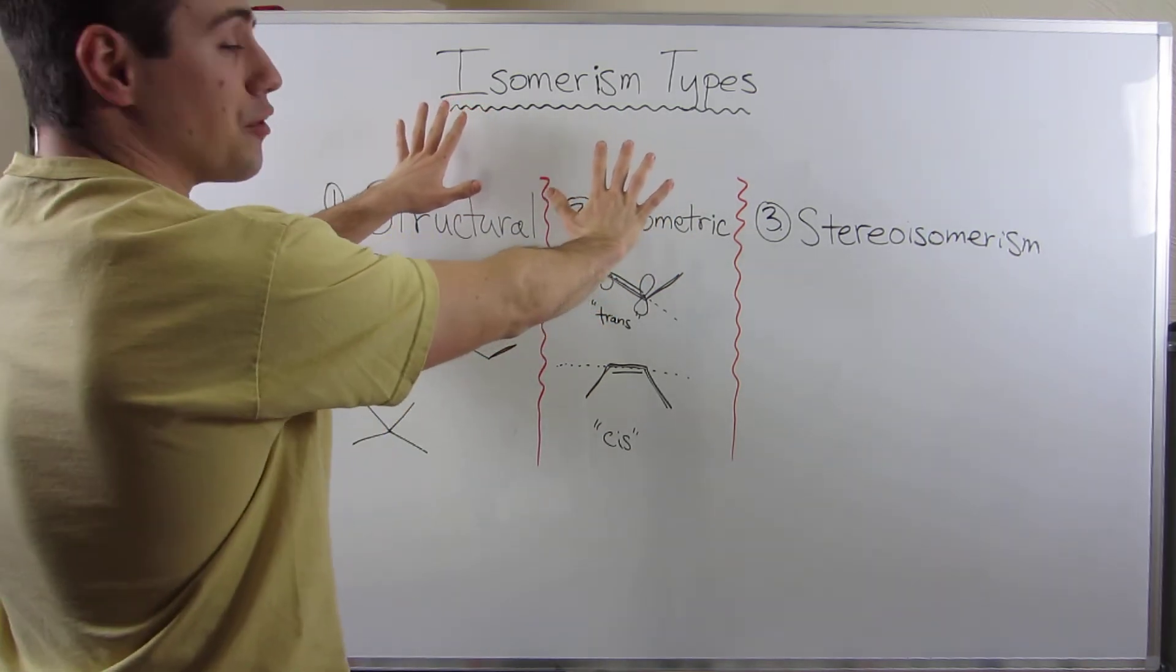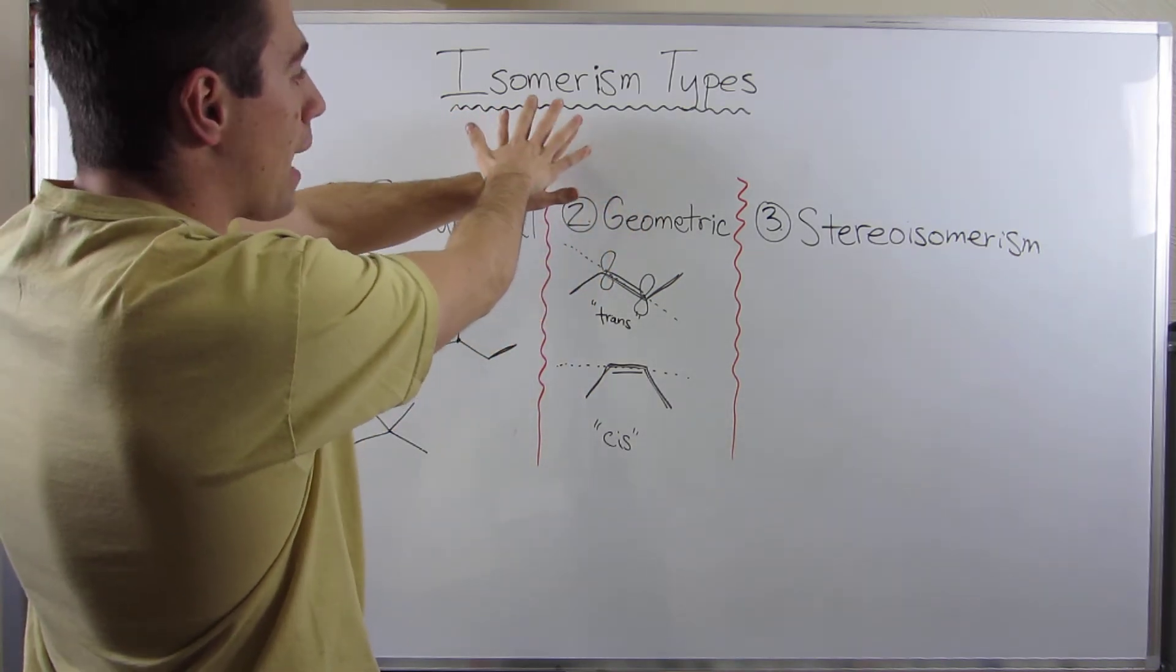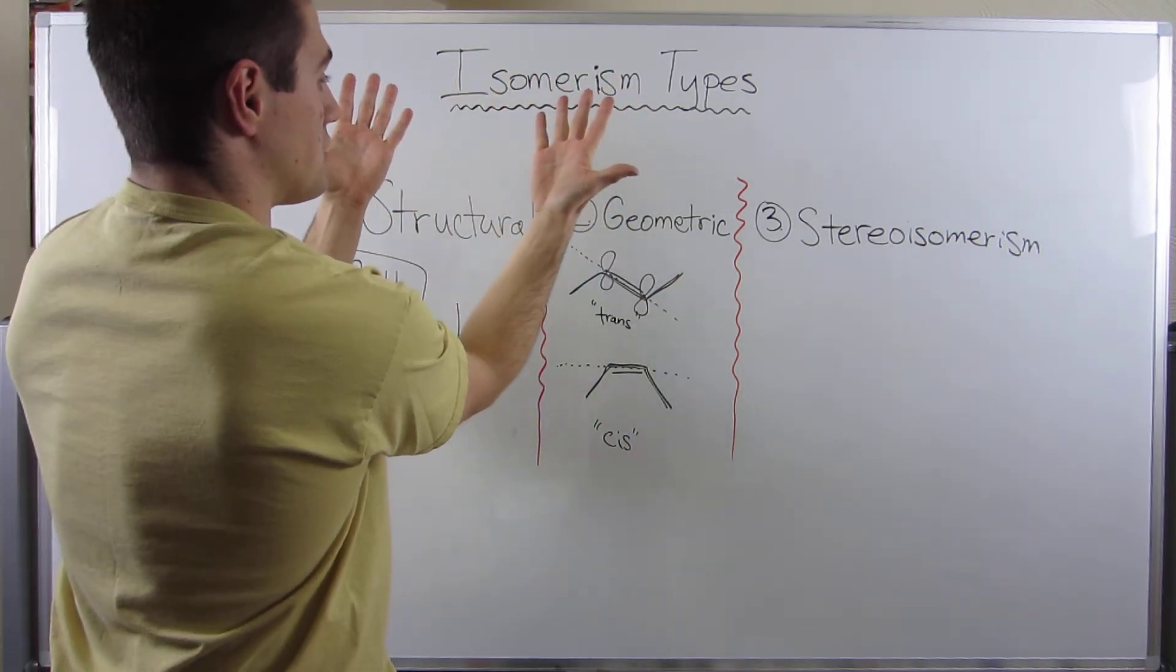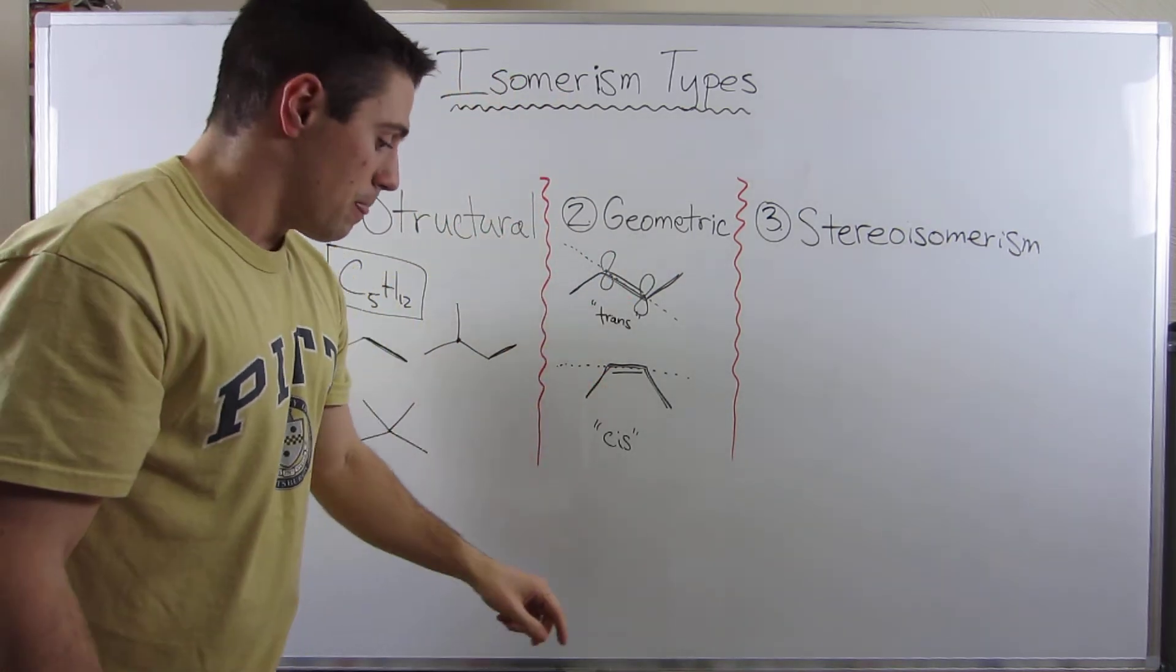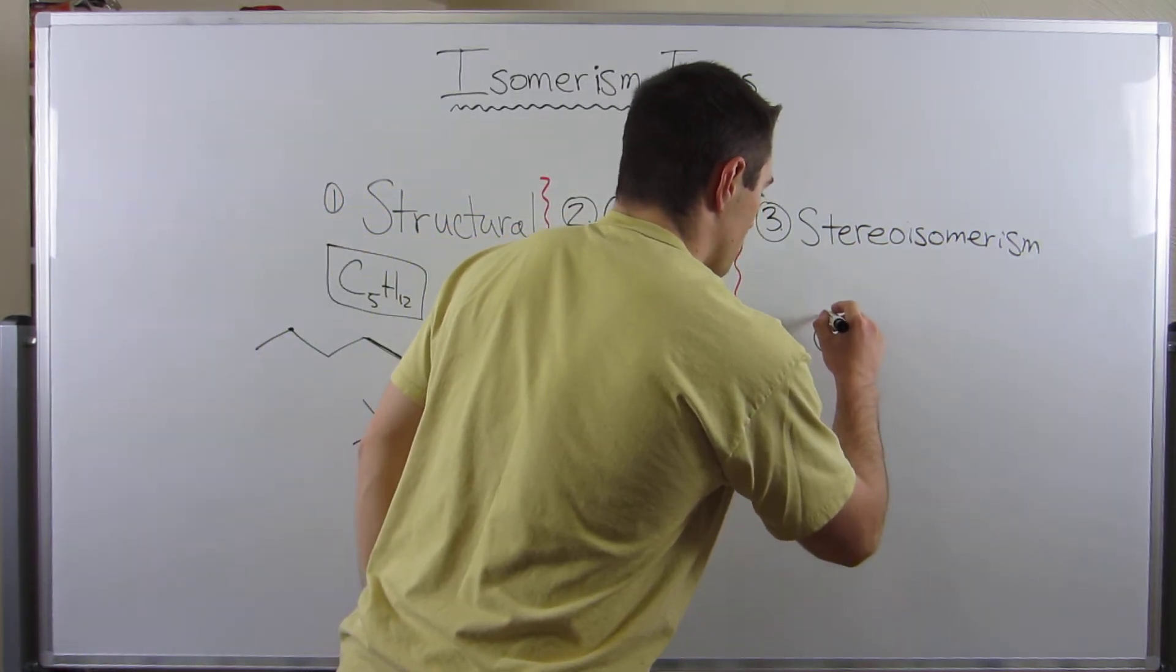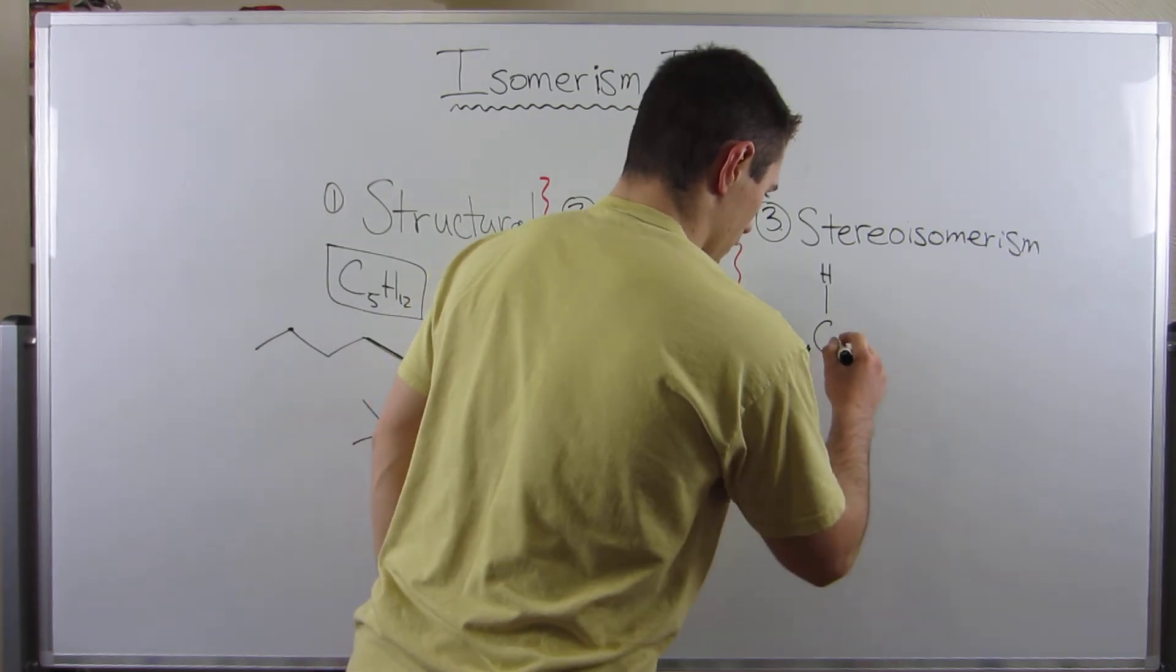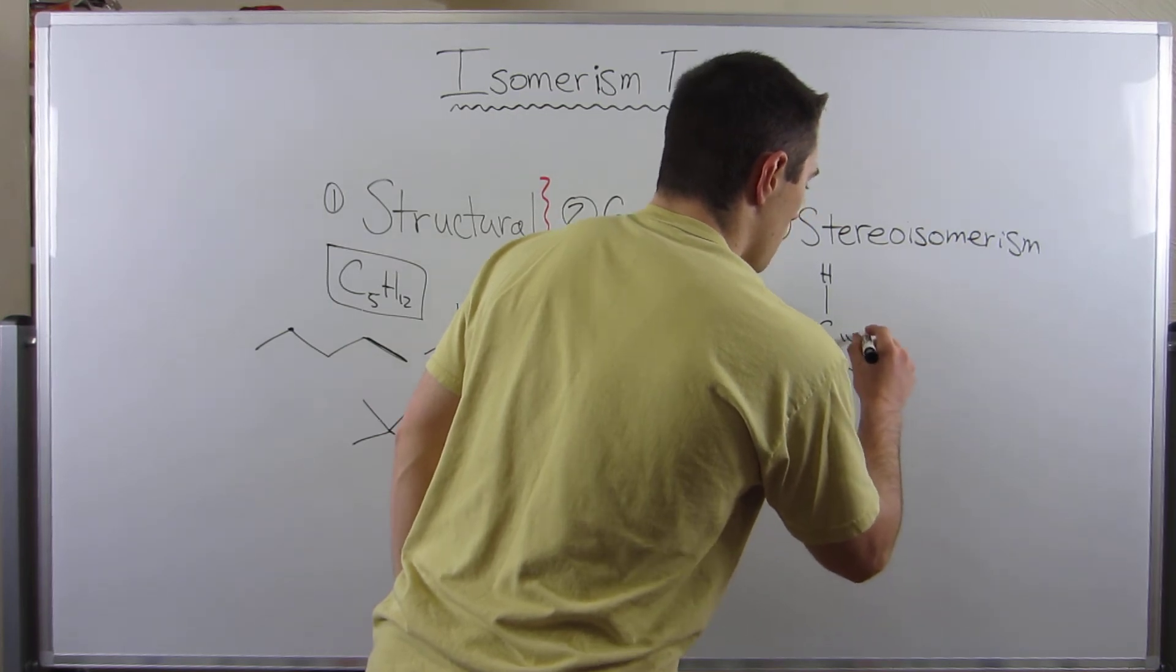However, they're not the same because if I was going to what's called superimpose them, they don't match up, right? Yes, I know you could say you do this, but they have to look the same, right? You have to have them in the same position and put them on top of each other. They don't match up, right? We have that same thing happen in organic chemistry. If I drew you guys this structure right here: hydrogen, fluorine, bromine, iodine.